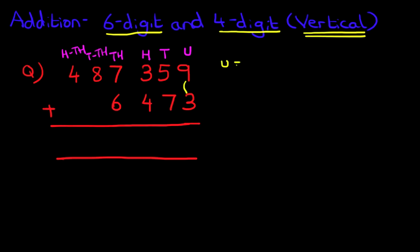So we've got units: nine plus three. Nine plus three is twelve. And we write it down like this.